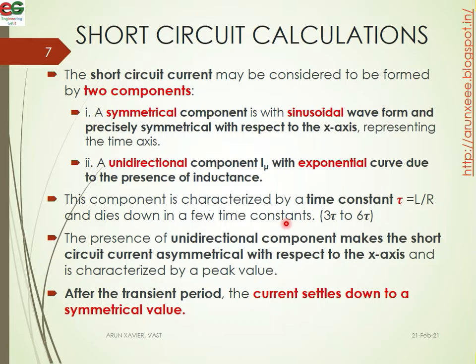The presence of the unidirectional component makes the short circuit current asymmetrical with respect to the axis, and its characteristic is described by the peak value. After the transient period, the current settles down to its symmetrical steady-state value.